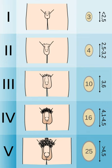Tanner 2, Small amount of long, downy hair with slight pigmentation at the base of the penis and scrotum, males, or on the labia majora, females, 10 to 11.5.